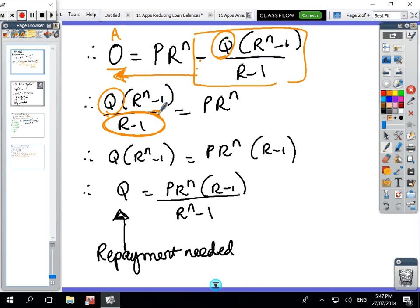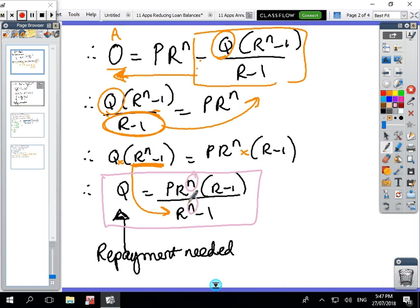We're trying to isolate the value of Q, so when we're solving equations you do opposite. So this division becomes a times and then this times ends up being a division. I multiplied by R minus 1 and then to get rid of this times I end up with the division. So this is a formula to calculate the repayments to pay back the loan in a certain number of periods.